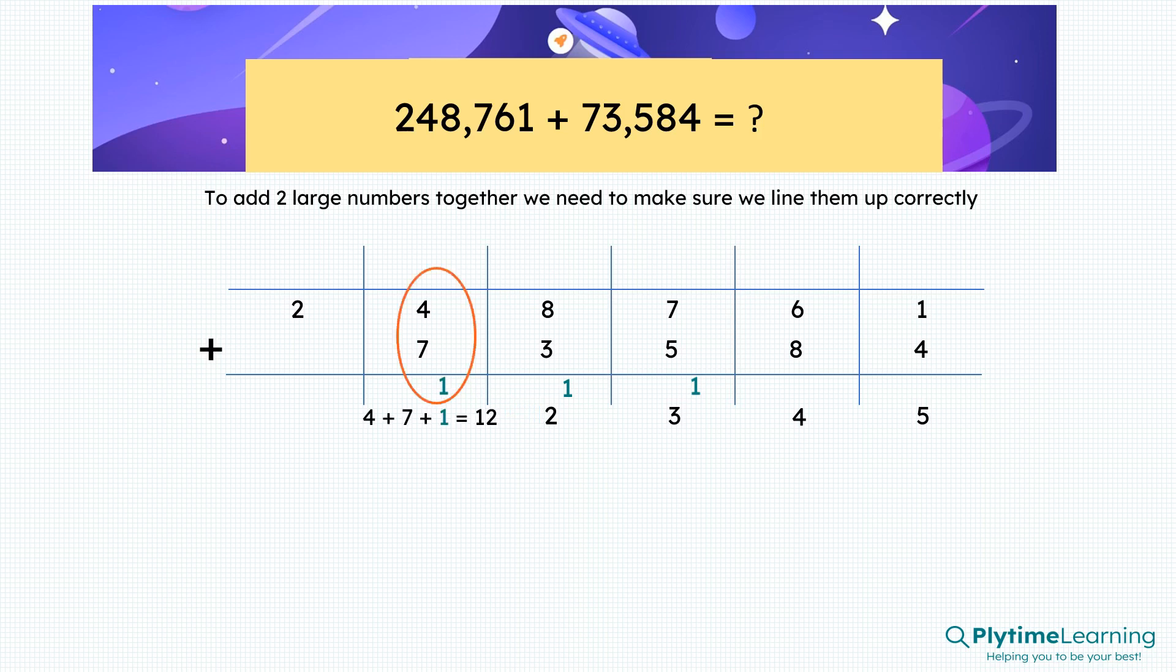Four plus seven plus one is a total of twelve again. We write the two and we carry the one forward.